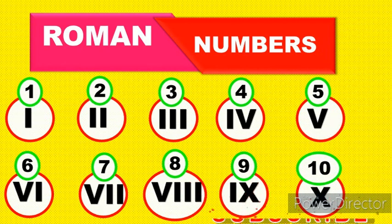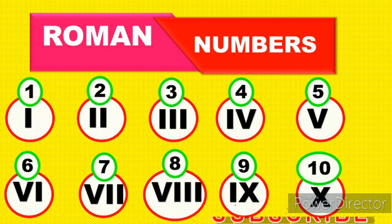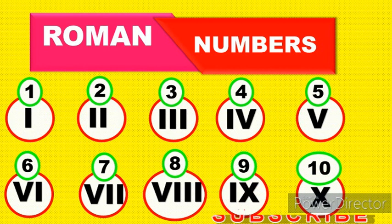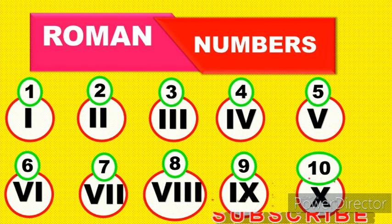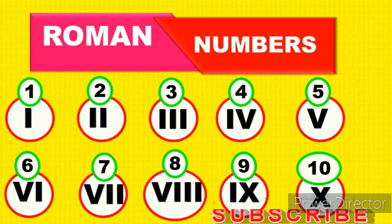Roman numbers are represented by letters. 1 is represented by I, and 2 is represented by II. Then 3 is represented by III. 4 is represented by IV, which equals 4.